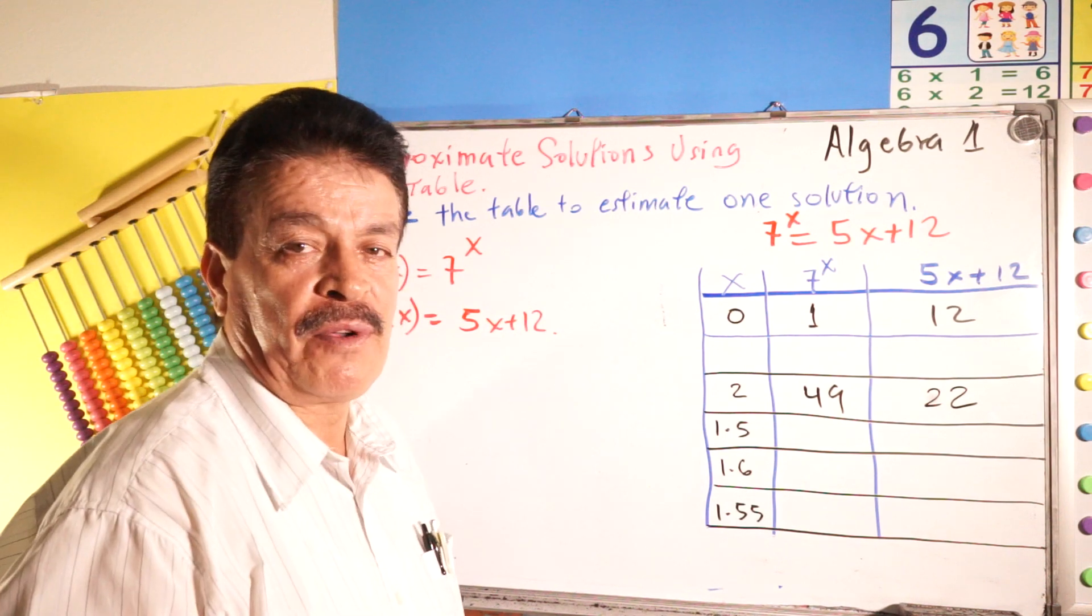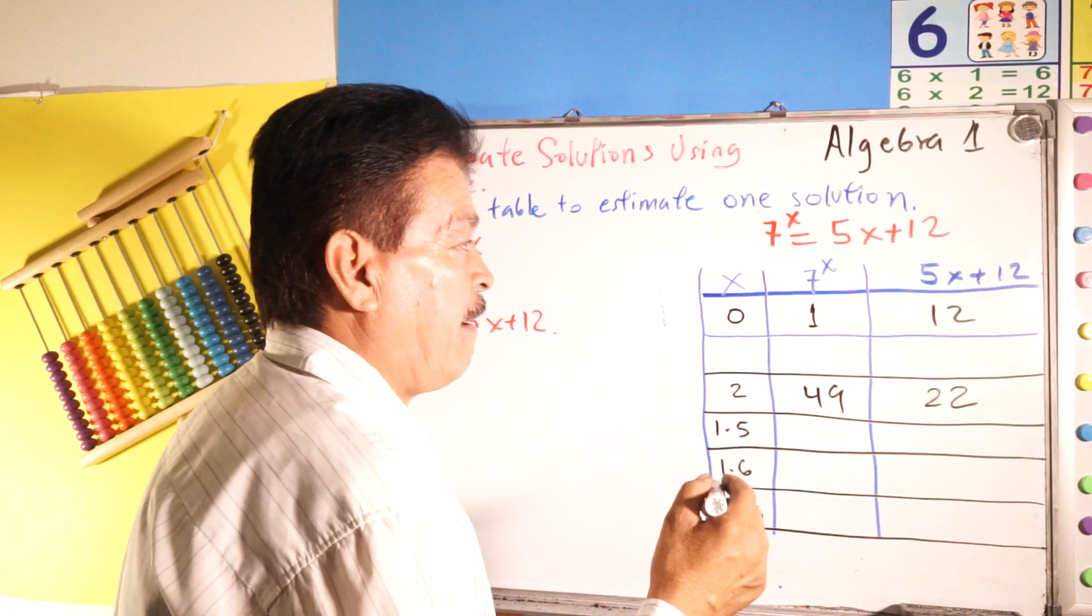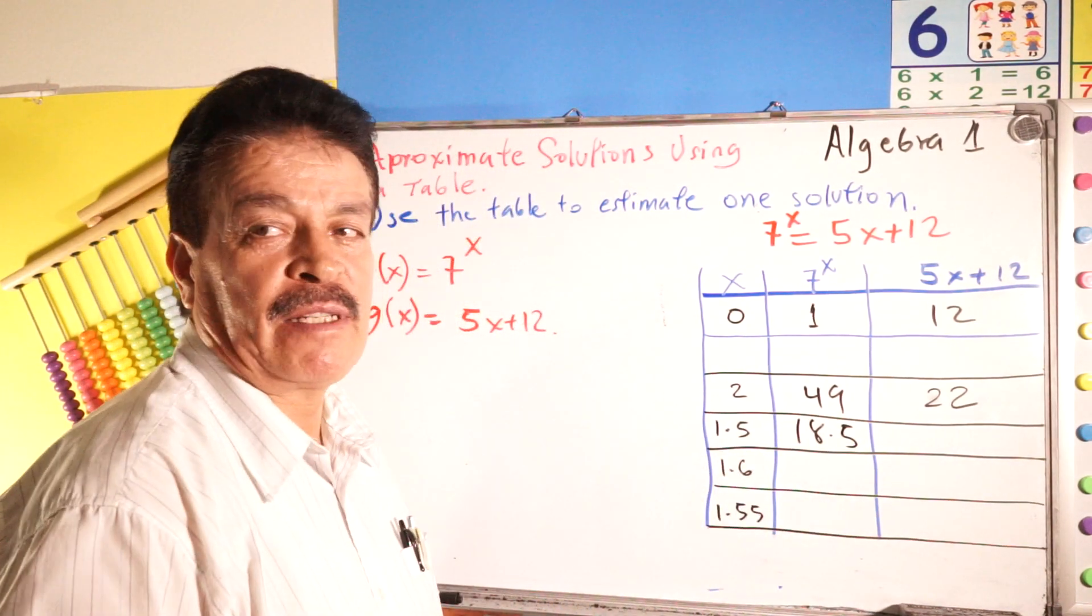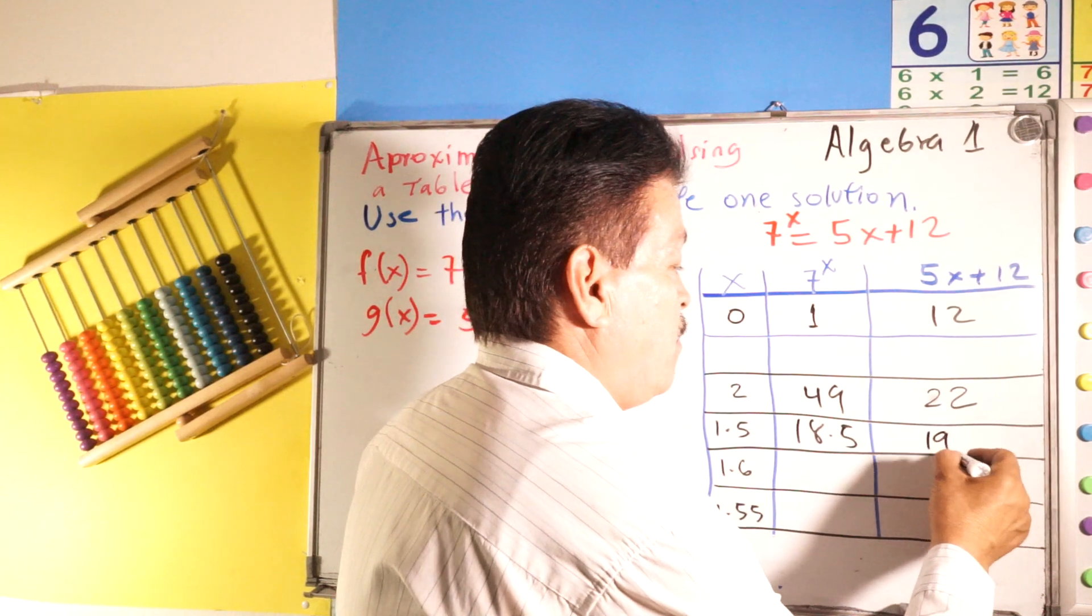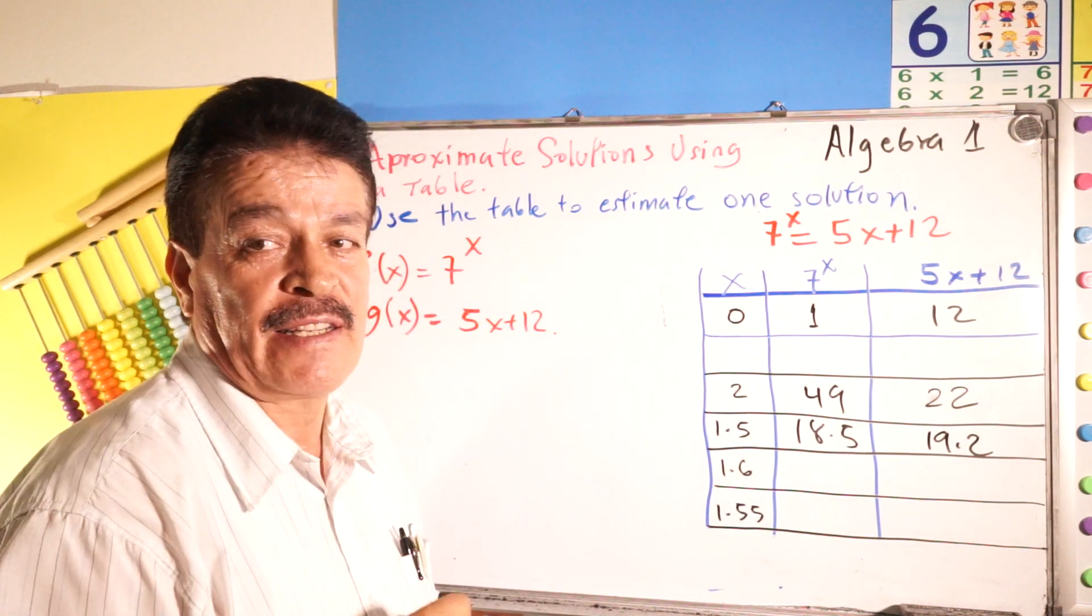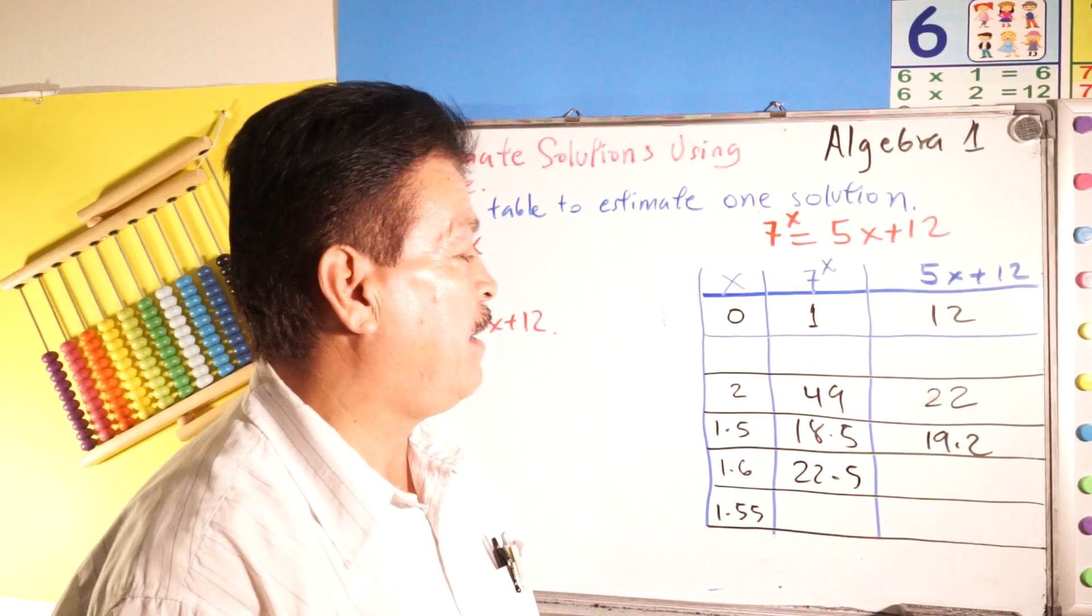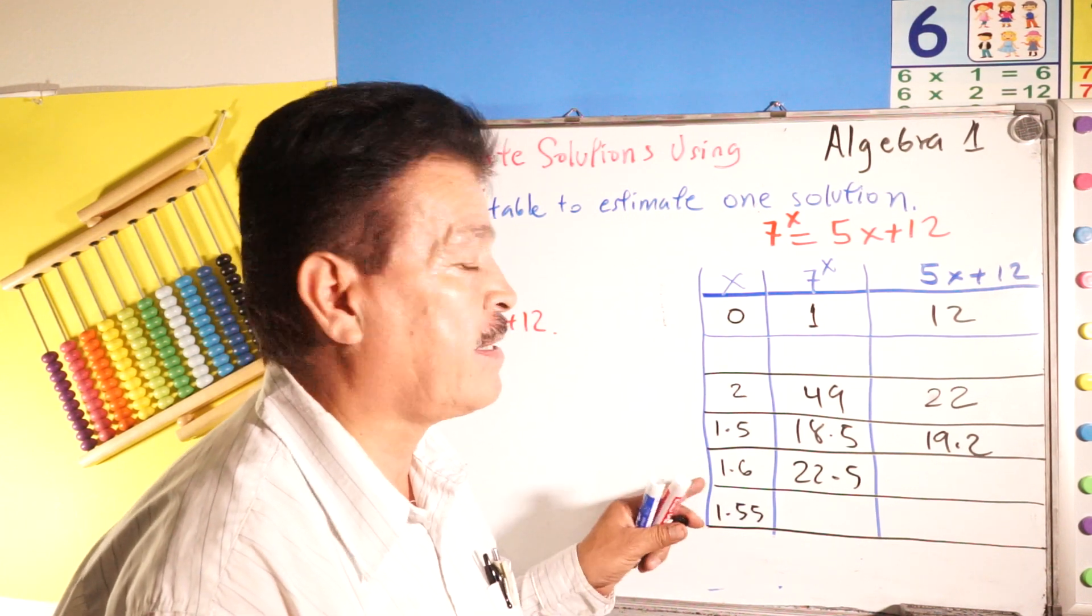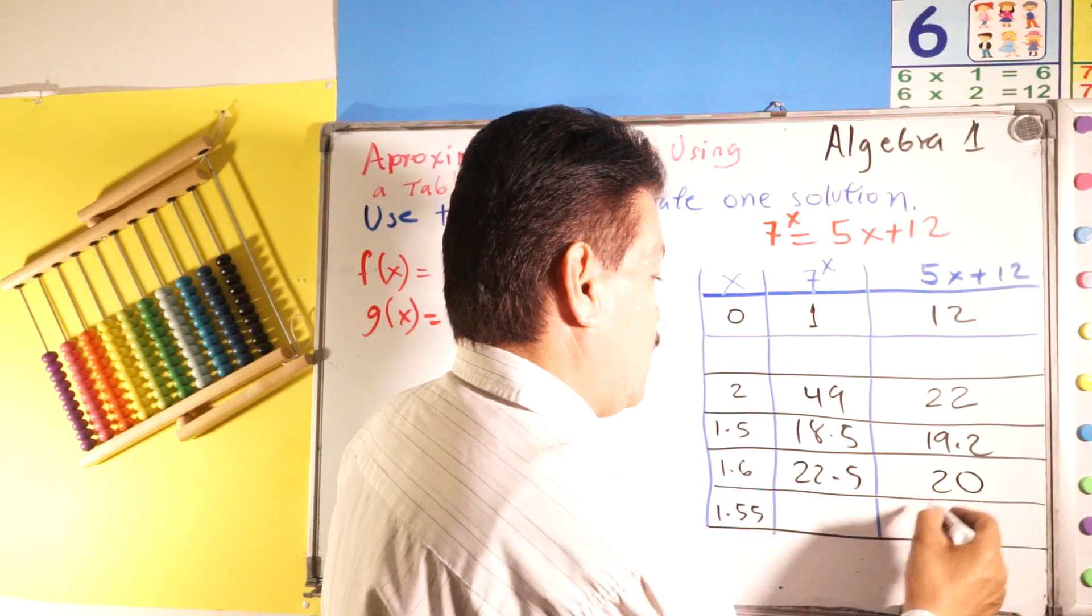1.5. When X is 1.5, how much is 7 to the X power? It is 18.5. How much is 5X plus 12? The other side is 19.2. 1.6. How much is it? It's 22.5. 5X plus 12 when X equals 1.6, then X equals 20.